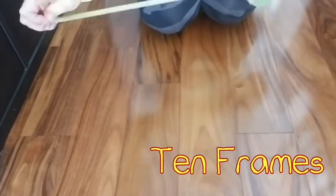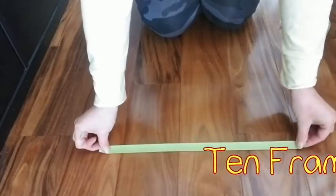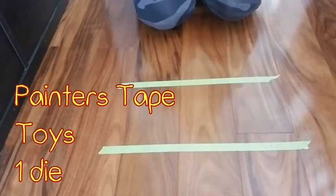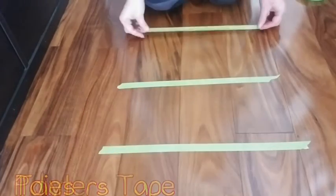Now for the last game, this is called 10 frames. We talked a little bit about 10 frames when I was showing you how to make a number line. So for this one, you're going to need painter's tape, some small toys, and one die.